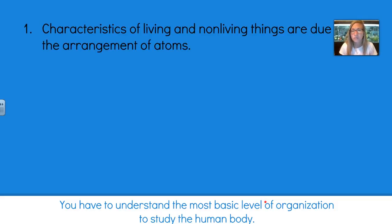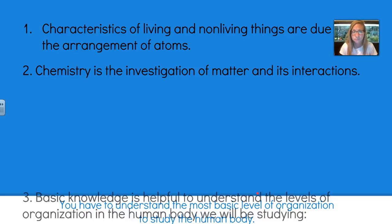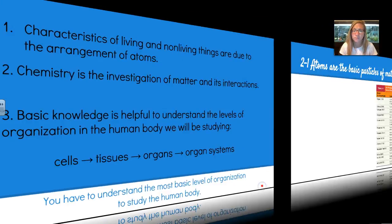Remember that characteristics of living and non-living things are due to the arrangement of atoms. This basic knowledge, covered in chemistry or biochemistry, is helpful to understand the levels of organization because we will be breaking down each body system at its cellular, tissue, organ, and organ system levels.